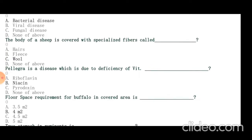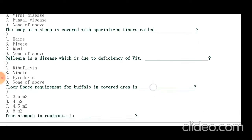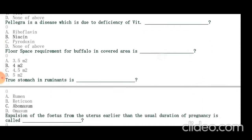Floor space requirement for buffalo in covered area is 4 meters square. 3.5 meters square is for cattle. True stomach in ruminant is abomasum.